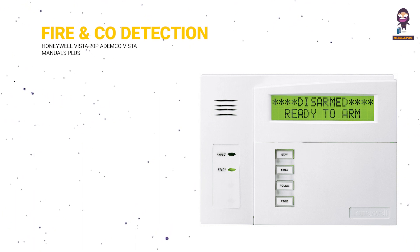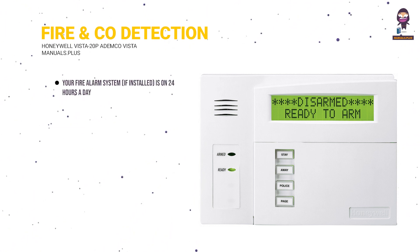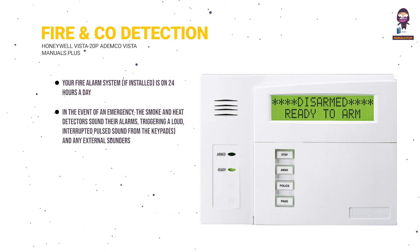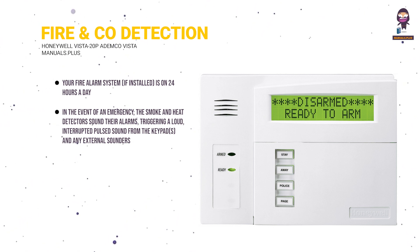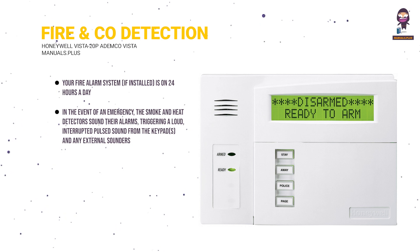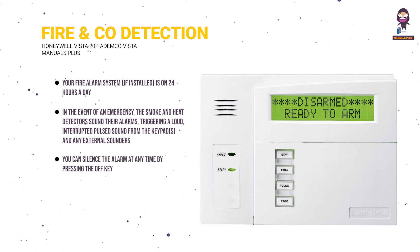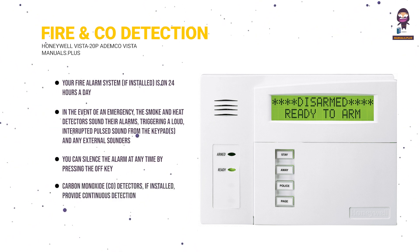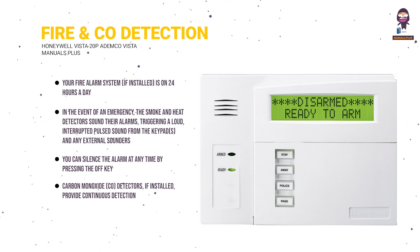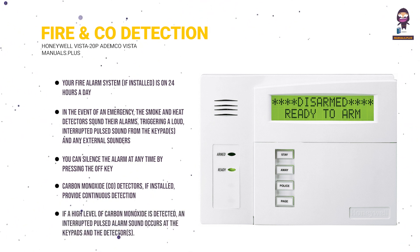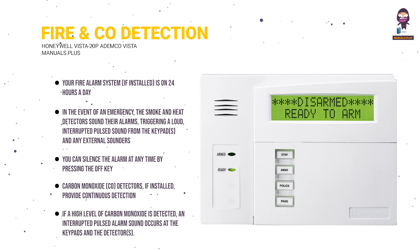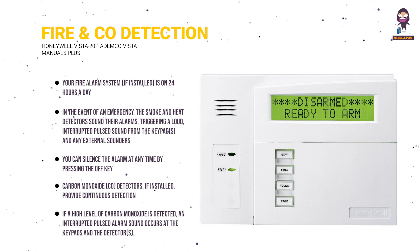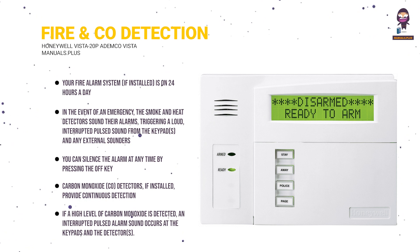Notes on fire and CO detection. Your fire alarm system, if installed, is on 24 hours a day for continuous detection. In the event of an emergency, the smoke and heat detectors sound their alarms, triggering a loud, interrupted pulse sound from the keypads and any external sounders. You can silence the alarm at any time by pressing the off key. The security code is not needed to silence fire alarms. Carbon monoxide detectors, if installed, provide continuous detection. If a high level of carbon monoxide is detected, an interrupted pulsed alarm sound occurs at the keypads and the detectors. Immediately move to a spot where fresh air is available, preferably outdoors. From a safe area, call your security service provider for further instructions.